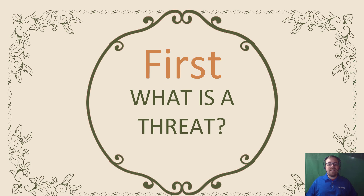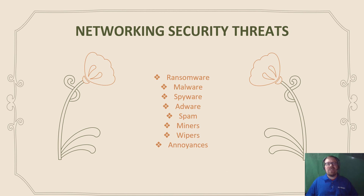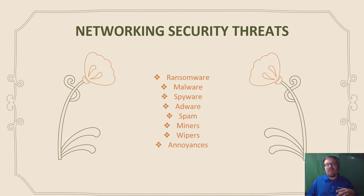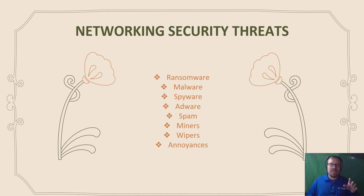Before we get too much further into it, we need to ask ourselves: what is a threat? This is a list of threats I made — by no means complete, just a few things in today's environment. We have things like ransomware, malware, spyware, adware, spam, miners, wipers, and minor annoyances. These aren't mutually exclusive categories. For example, spam is frequently used to deliver other things — unwanted messages, phishing — all used to deliver things like ransomware. Sometimes ransomware can also exfiltrate data or function as a wiper. There's a lot of overlap between the different things going on.